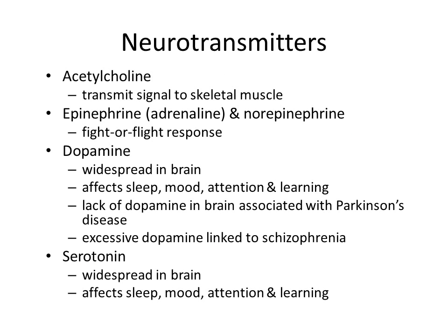Nerves communicate with one another and with muscle cells by using neurotransmitters — small molecules that are released from nerve cells and rapidly diffuse into neighboring cells, stimulating a response once they arrive. Many different neurotransmitters are used for different jobs, and these are the most important ones you need to know. Dopamine and serotonin are involved in subtle messages of thought and cognition. They are widespread in the brain and they affect sleep, mood, attention, and learning. Lack of dopamine in the brain is associated with Parkinson's disease, while excess dopamine in the brain is linked with schizophrenia.